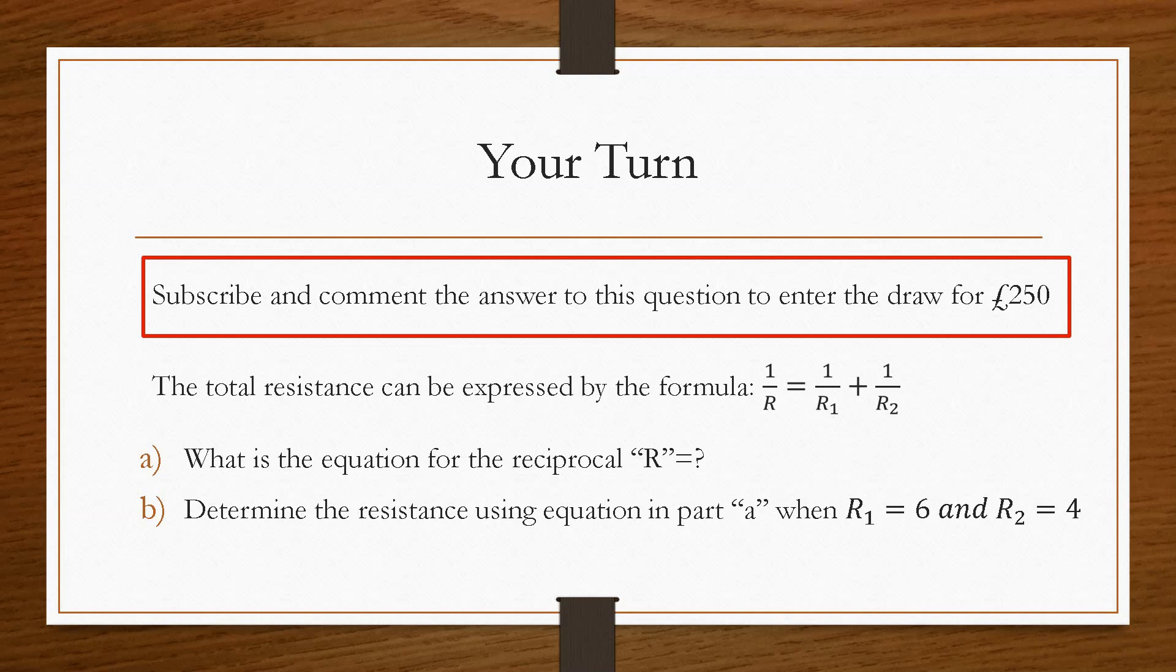So this question here is in two parts. The first part, part a, is we have to write the reciprocal of the formula that it's given above. Now the reciprocal being that this is 1 over r. So the reciprocal is r. So we need to change this from 1 over to r. And we can do that using algebraic manipulation. So you must comment that answer.